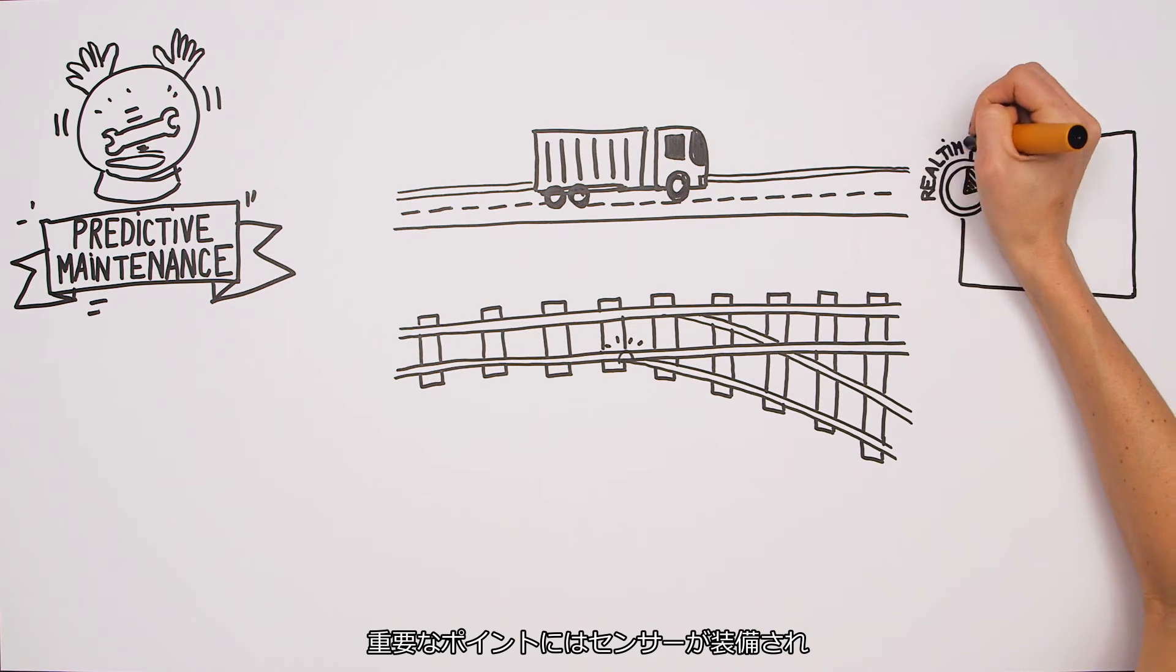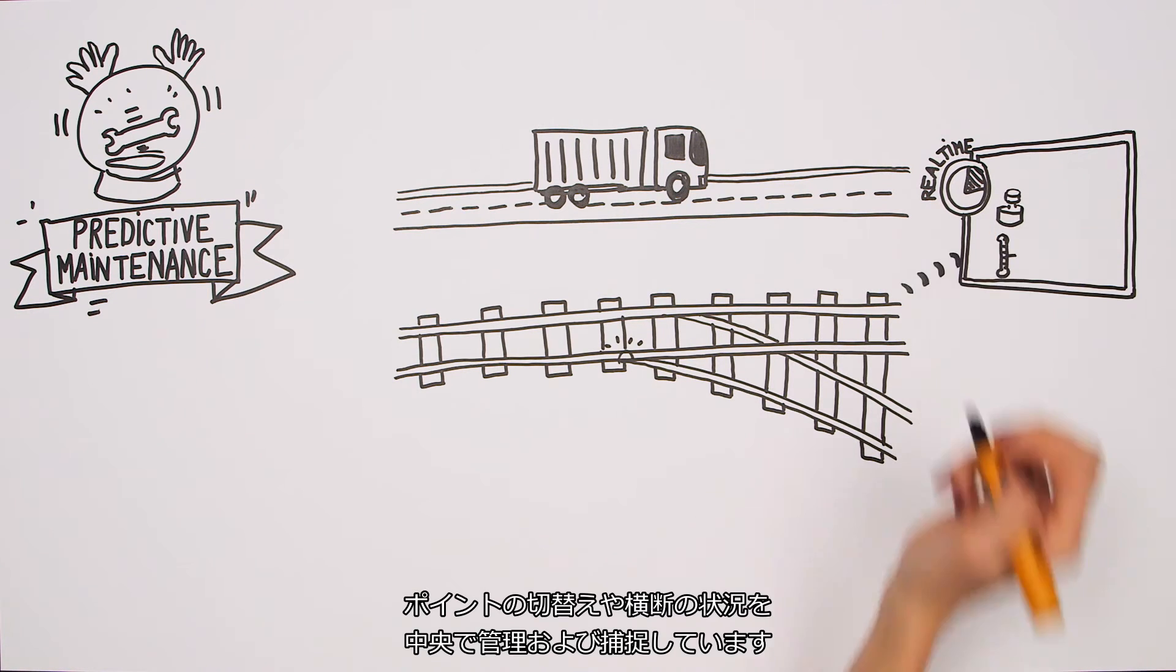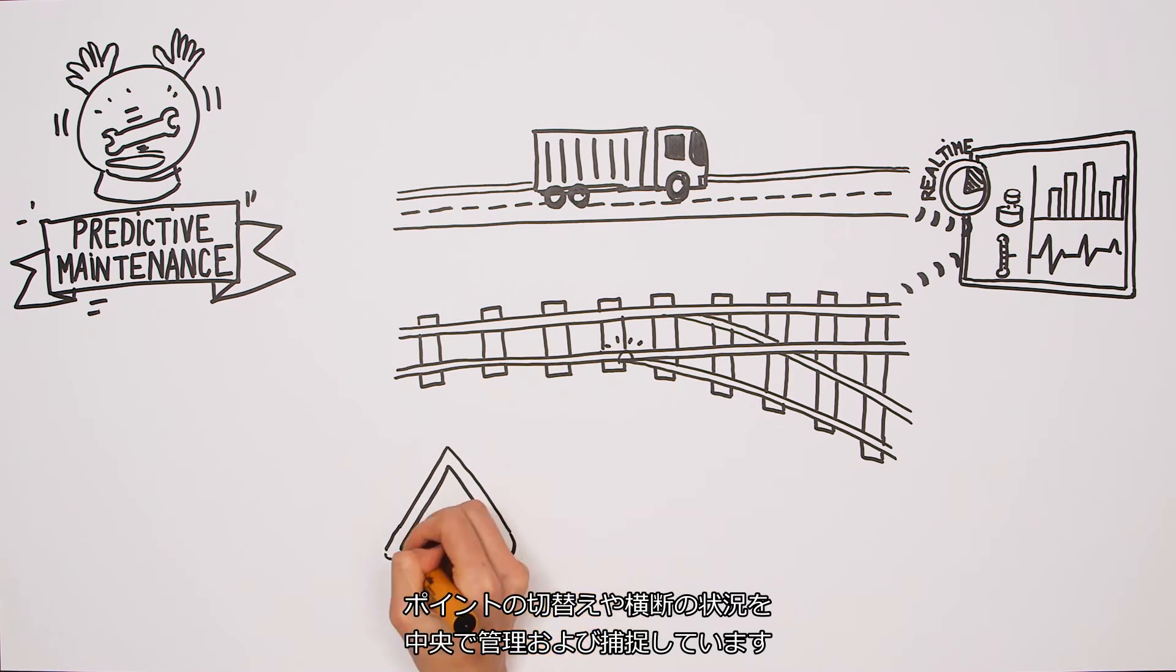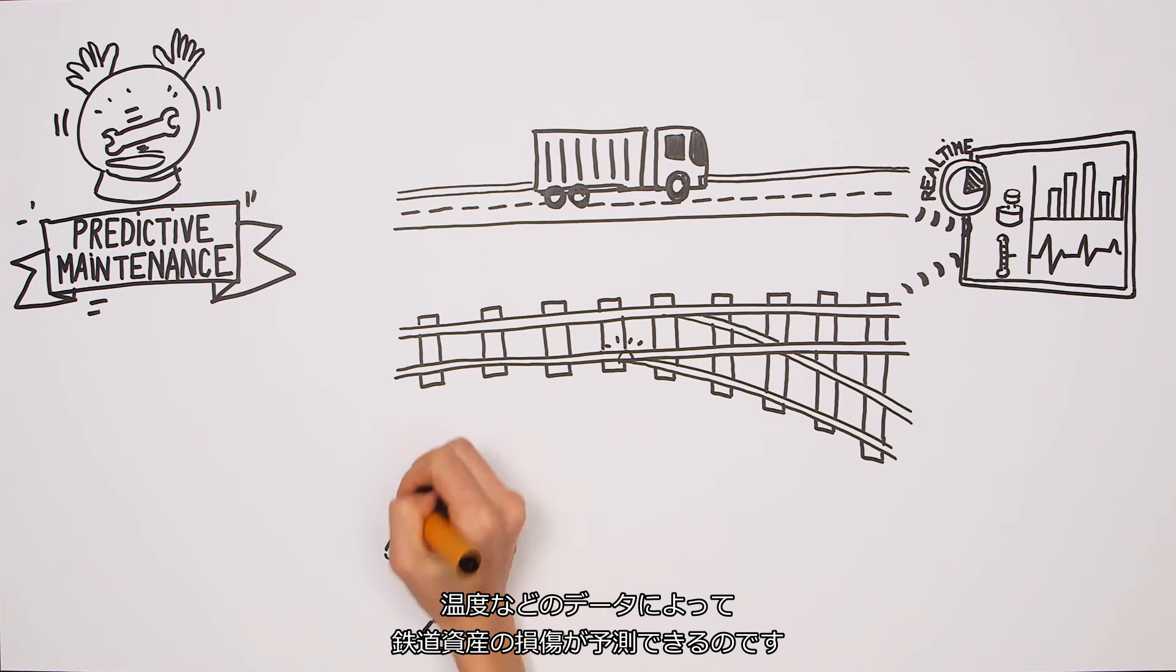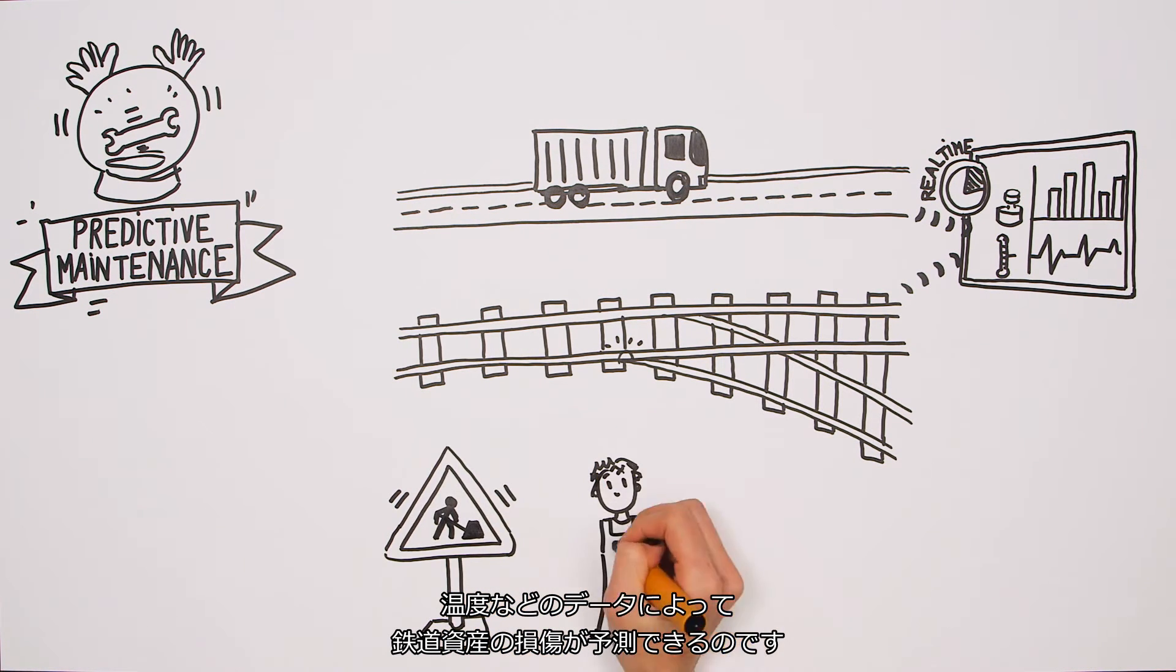Critical network points will be equipped with sensors to centrally monitor and capture whenever the point is switched or crossed. The data, including temperature data, is used to predict wear and tear of the railway asset.